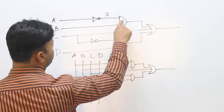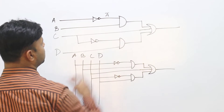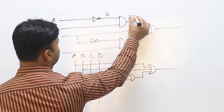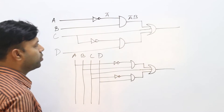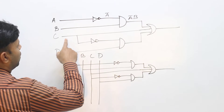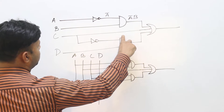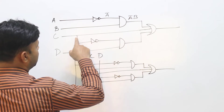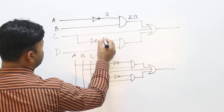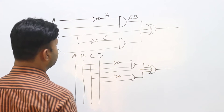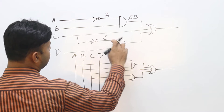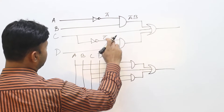We will try to do A bar — we will try to prove A and B. In this case, the gate output is 1. The first gate is 1. C bar is 1.